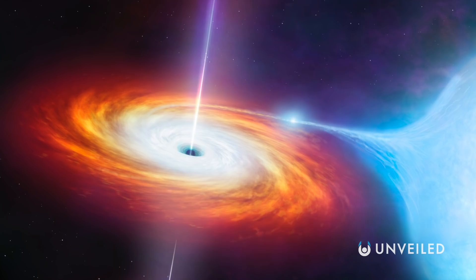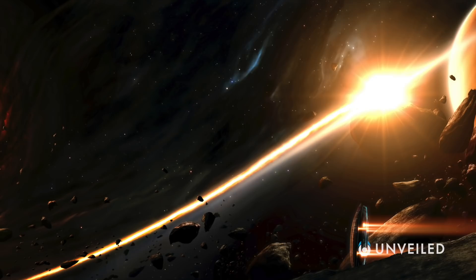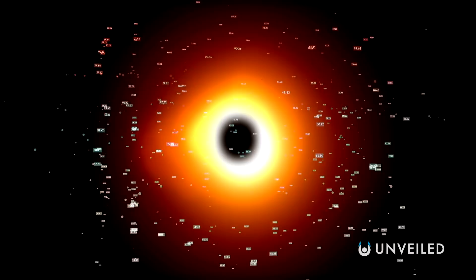But a stellar black hole is only one of three types of black hole that scientists believe exist. Another is primordial black holes, which are thought to have formed right after the Big Bang. These mind-boggling structures are the smallest and, according to NASA, are the size of an atom with all the mass of a mountain.